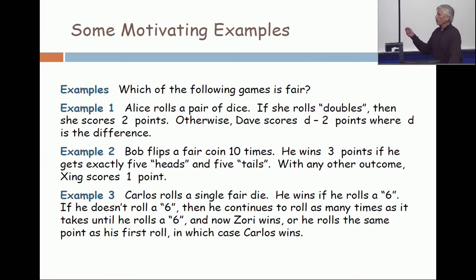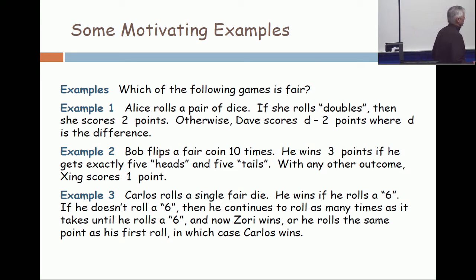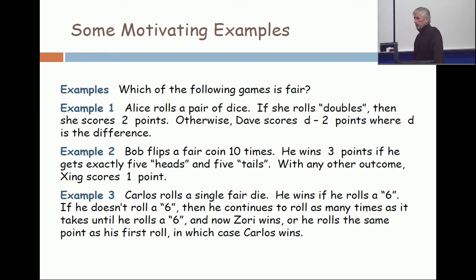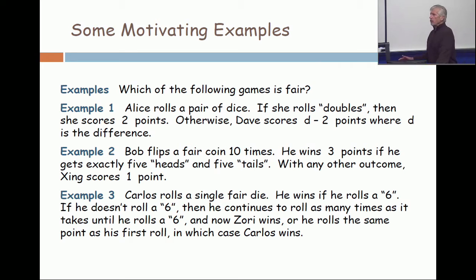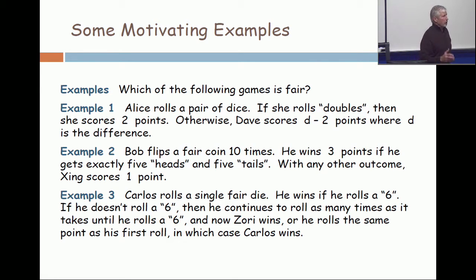Example three. Carlos rolls a die. If it results in a six, the game is over and he wins. If he doesn't roll a six, the score he rolls is called his point. Now he rolls the die over and over again until one of two things happens: he rolls a six and loses, or he matches his point and wins. He keeps rolling until one of those two outcomes results.